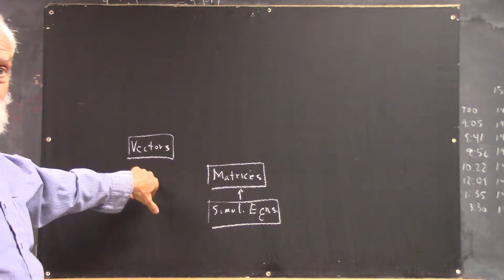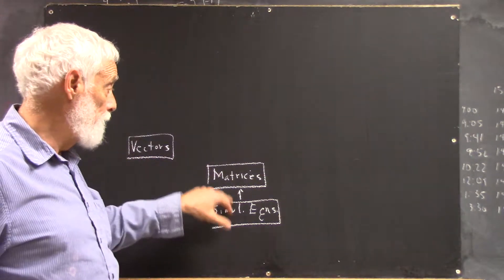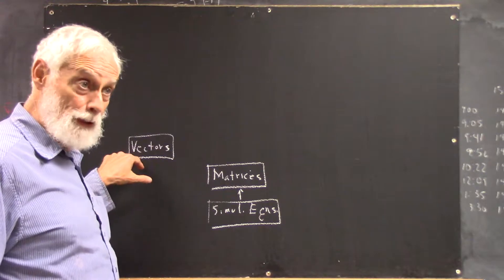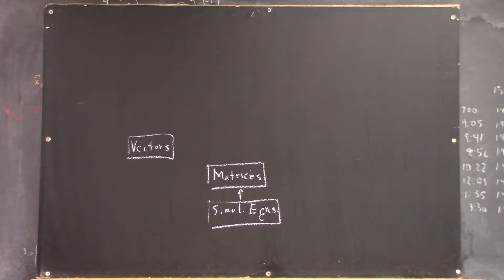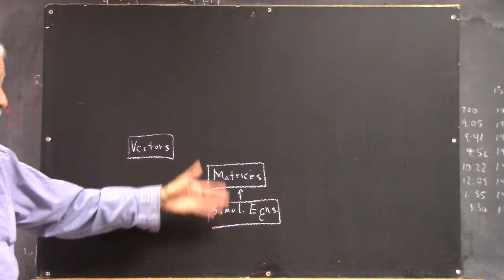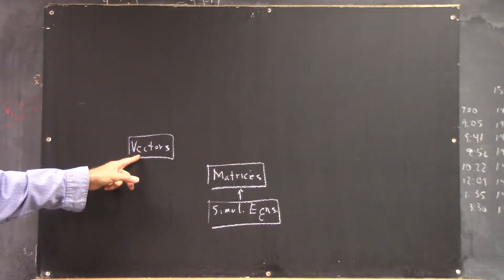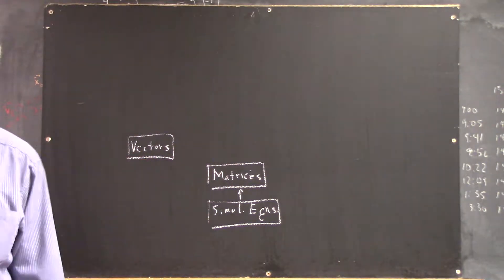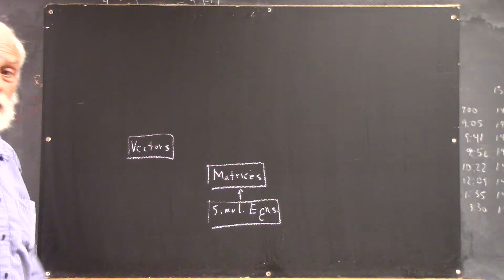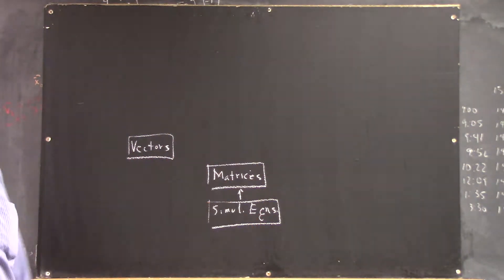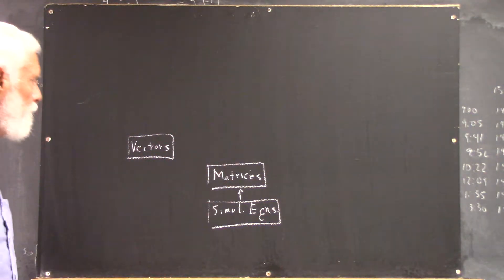Then we have vectors. Now, you don't need systems of equations or matrices to understand vectors. It's totally independent. So if you didn't understand something here, doesn't mean you don't understand how to combine i and j vectors.